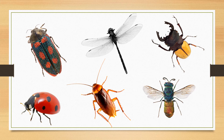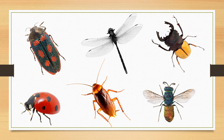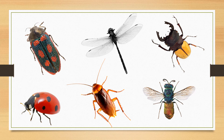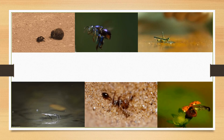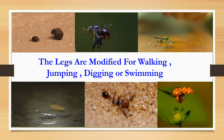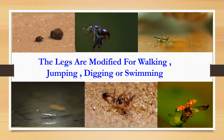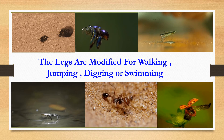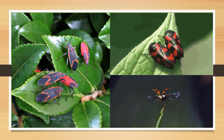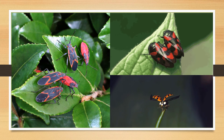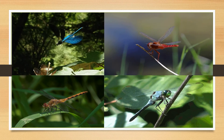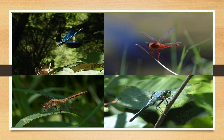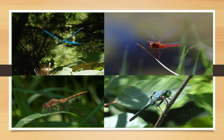Insects have differences in structures like wings, legs, antennae and mouth parts. The legs are modified for walking, jumping, digging or swimming. Most insects have wings which can be folded flat on their body — example: bug. There are some insects which cannot fold their wings — example: dragonfly.